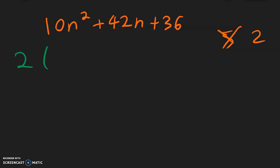So we have a 2 outside. 10n squared divided by 2 is going to be 5n squared. 42 divided by 2 is going to be a 21n. And 36 divided by 2 is going to be a positive 18.